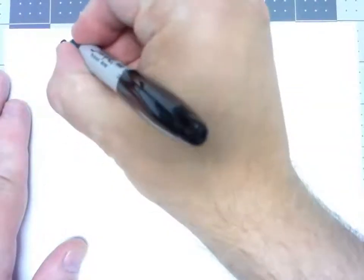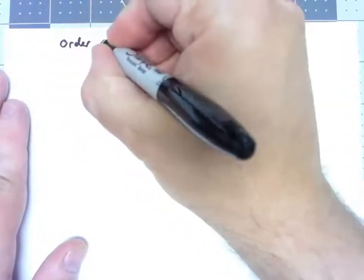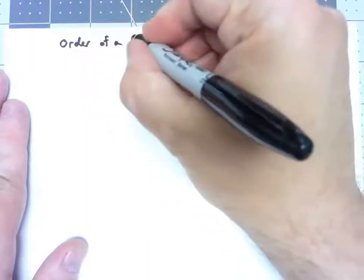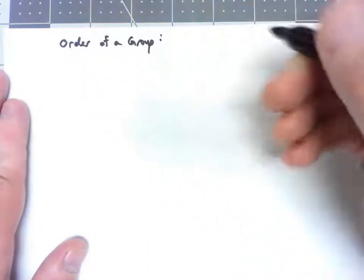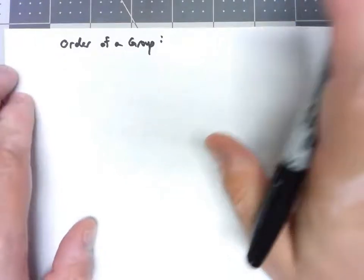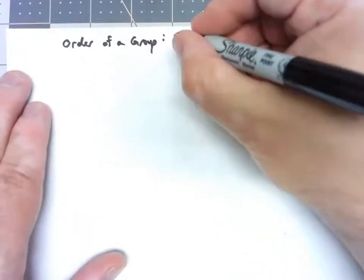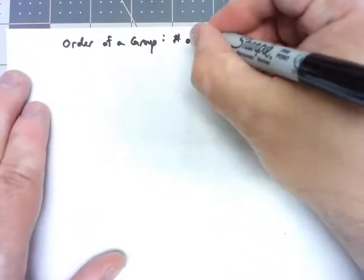Let's start with a couple of definitions. The first thing we want to talk about is what we call the order of a group. And that's very simple. The order of a group is the number of elements in that group.